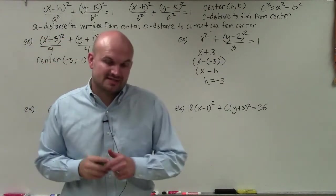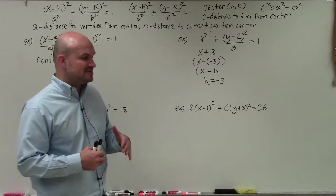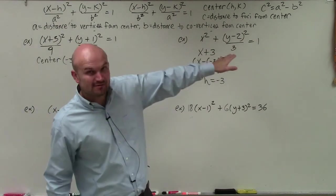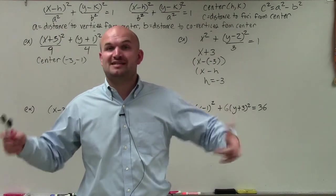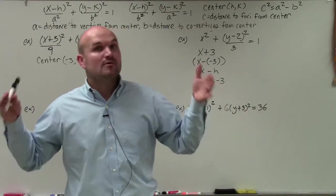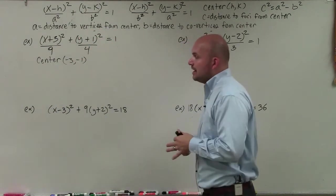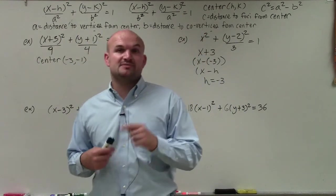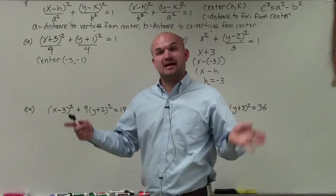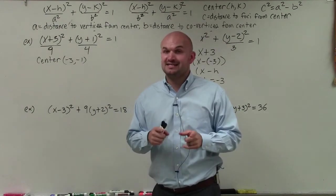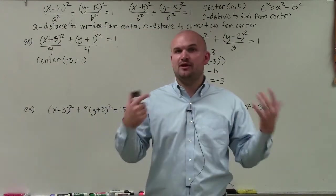Once we knock out the center, the next thing we want to do is figure out our a, b, and c. Remember, a is the distance from the center to your vertices, which represent your major axis — your vertices are the endpoints of your major axis. The major axis is always larger than your minor axis. So a squared is always going to be larger than b squared, because b is the distance from the center to your co-vertices, and the co-vertices are the endpoints of your minor axis. Therefore, a is always going to be larger than b for an ellipse.